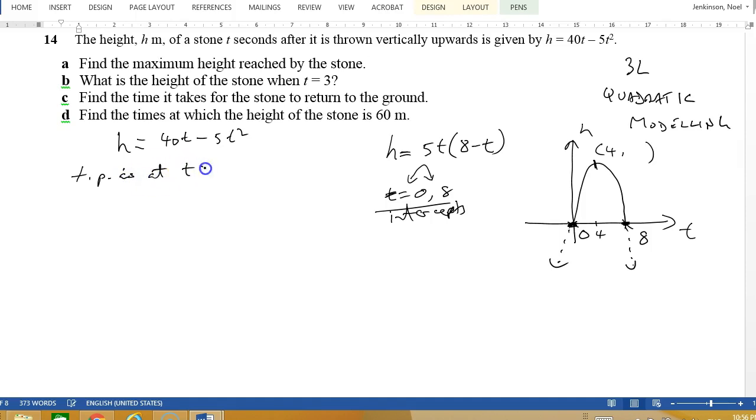Let time equal 4. We'll get h equals 40 times 4 minus 5 times 4 squared, which is 160 minus 80, and we get a height of 80 meters. So I think that's the actual first answer, the height is 80 meters.